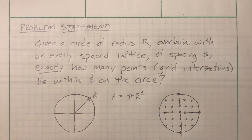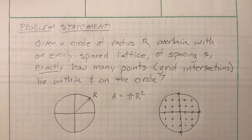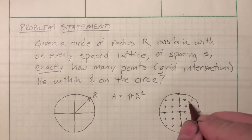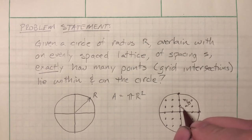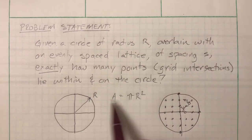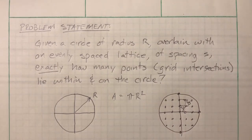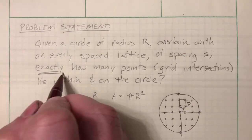For the purposes of this problem, we're going to assume the lattice is centered on the circle. You could solve this without that assumption, but it's a complication I don't want to deal with. One thing you can do is compute the area of one grid cell and divide that into the circle area — that's probably pretty close, but I want to know exactly how many points are inside or on the circle.